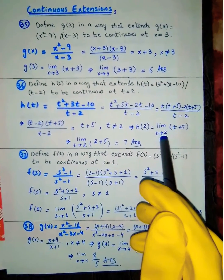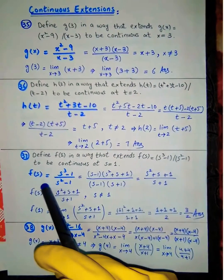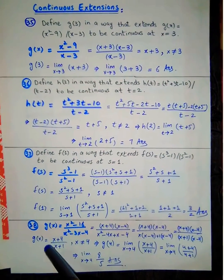Applying the limit as t approaches 2: we put t = 2 into t + 5, giving 2 + 5 = 7. So h(2) = 7.